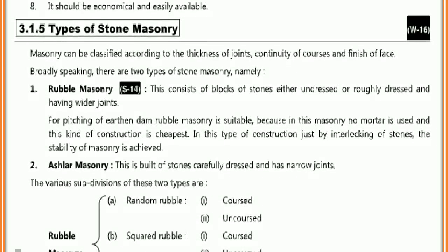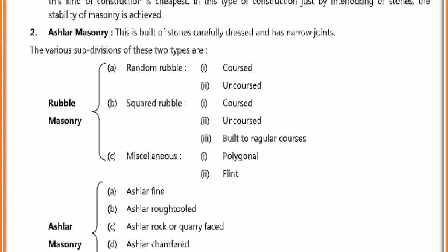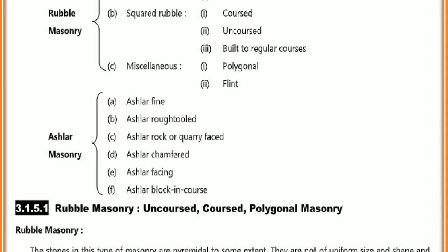What are the types of stone masonry? Generally, stone masonry is classified into two categories: Rubble masonry and Ashlar masonry. Rubble masonry is further classified into: coursed rubble masonry, uncoursed rubble masonry, random rubble masonry, dry rubble masonry, polygonal rubble masonry, and flint rubble masonry. Ashlar masonry is further classified into Ashlar fine, Ashlar rub tooled, Ashlar rock or quarry faced, Ashlar chamfered, and Ashlar block in course.